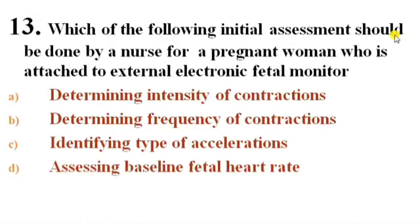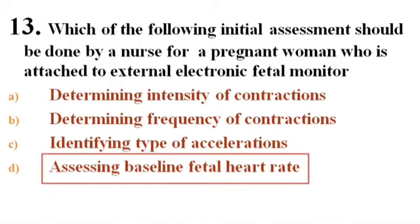Next question: Which of the following initial assessments should be done by a nurse for a pregnant woman attached to an external electronic fetal monitor? Options: A) Determining intensity of contractions, B) Determining frequency of contractions, C) Identifying type of acceleration, D) Assessing baseline fetal heart rate. Answer is D — assessing baseline fetal heart rate. The baseline fetal heart rate is the average range of beats per minute recorded within a 10-minute time frame; the normal range is 120 to 160 beats per minute. The nurse should first assess baseline fetal heart rate to identify any acceleration or deceleration in response to uterine contractions.